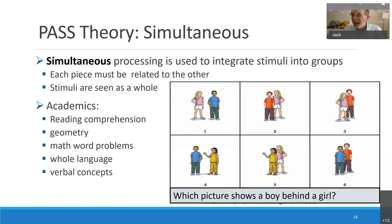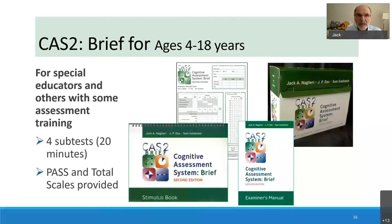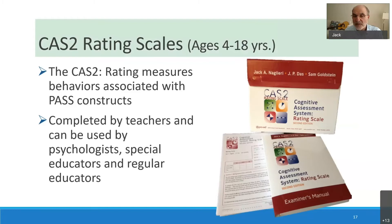We do online scoring and reporting, and we are currently working on a digital version which I think is going to be really good. The CAS2 Brief is just 20 minutes, good for screening like a tier two. I think whenever you give the CAS you should also give the rating scale — it'll help you communicate with and learn from the teacher at the same time.